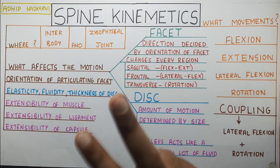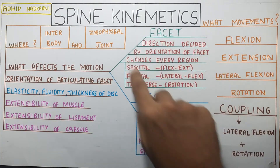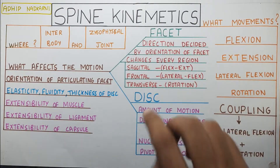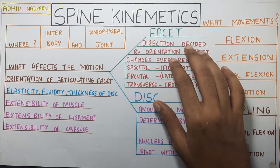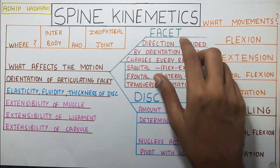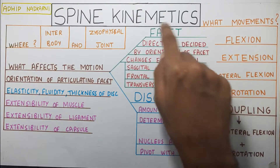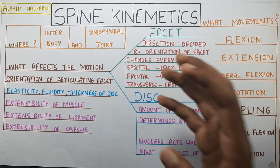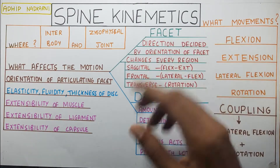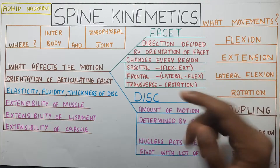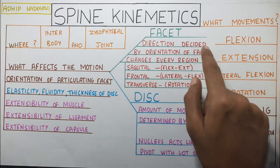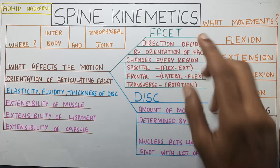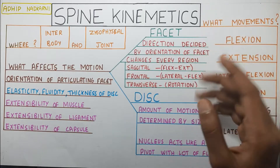Majorly, the two factors we are going to look at are the disc and the facet. Starting with the facet, the facet is the one which decides the direction of the movement that is going to occur. So direction is decided by the orientation of your facet.